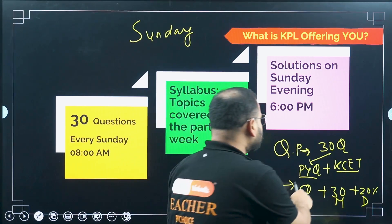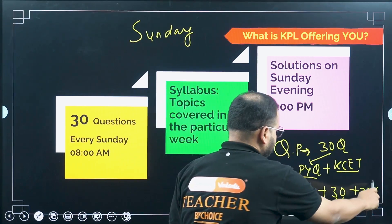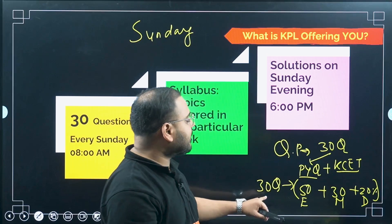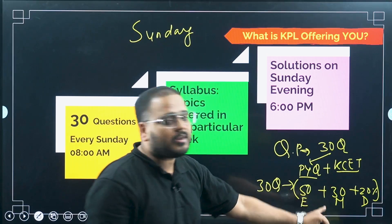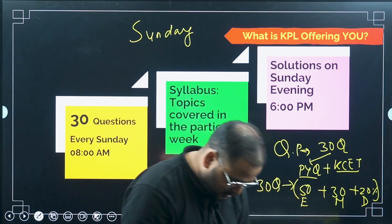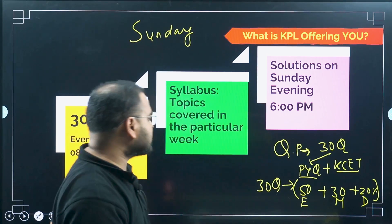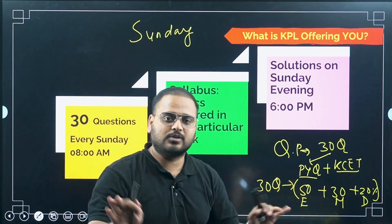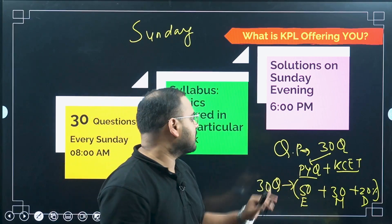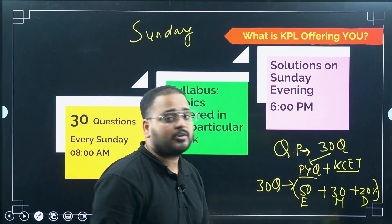Why is that important? Because in the actual examination, this is the pattern they follow. 50% of the questions are easier — solved directly from concept or formula-based. 30% are moderate, meaning application of concepts, and 20% are difficult, which involve multiple concepts from different chapters. The mock test paper will be designed in this way so that you cover all three structures.